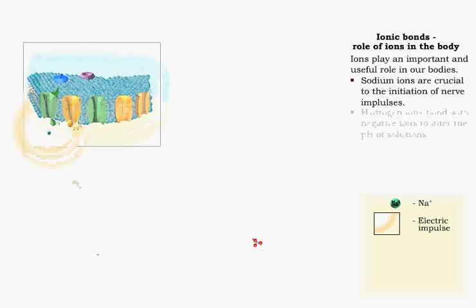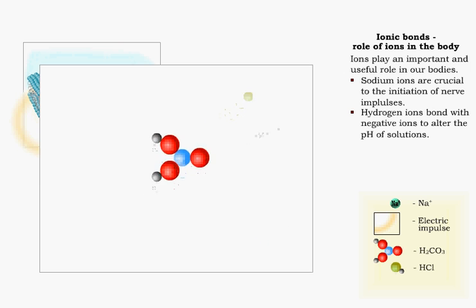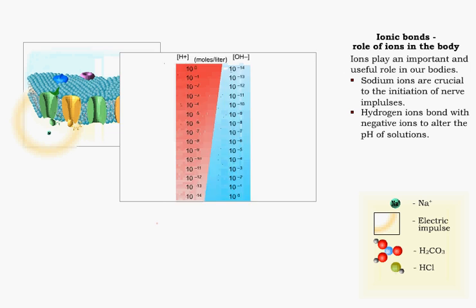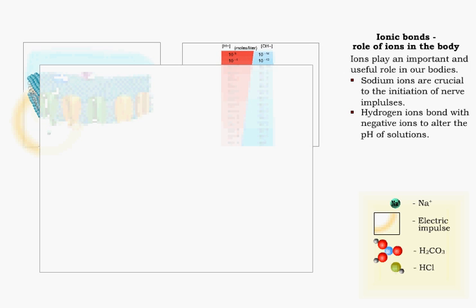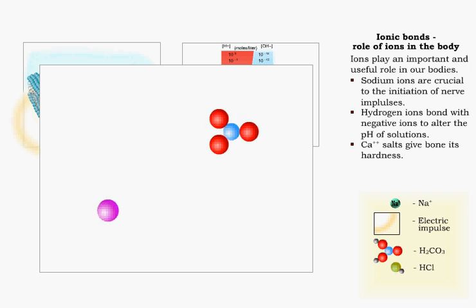The acidity of body fluids is regulated in part by the bonding of hydrogen ions with different types of negatively charged ions. Bone gets its hardness and strength from the reaction of calcium, phosphate, and carbonate ions.